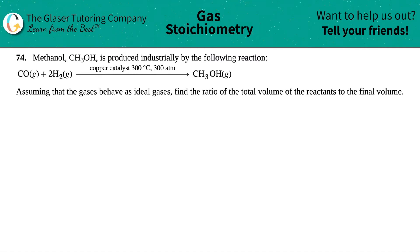Number 74. Methanol, which is CH3OH, is produced industrially by the following reaction. And then they give us this balanced equation over here.